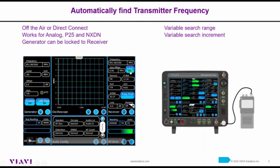There's a lock function on the receiver tile that will lock the generator frequency to the receiver frequency. You can include an offset — if there's a 5 or 45 MHz offset, it will track the receive frequency plus whatever offset is entered.